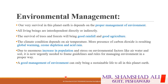Our survival on this planet Earth is dependent on the proper management of the environment. It is in the nature of living things to need clean air and water for survival. All living beings are interdependent, directly or indirectly. For example, we eat meat and vegetables which come from animals and plants, and they get their food from the soil. The animals get food from plants, and plants get food from the soil — this is basically interdependency.